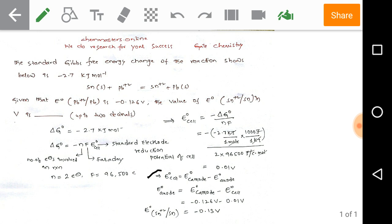From that we get minus 0.13 volts. This is the standard reduction potential of Sn²⁺ to Sn, which is the anode half cell in the reaction.